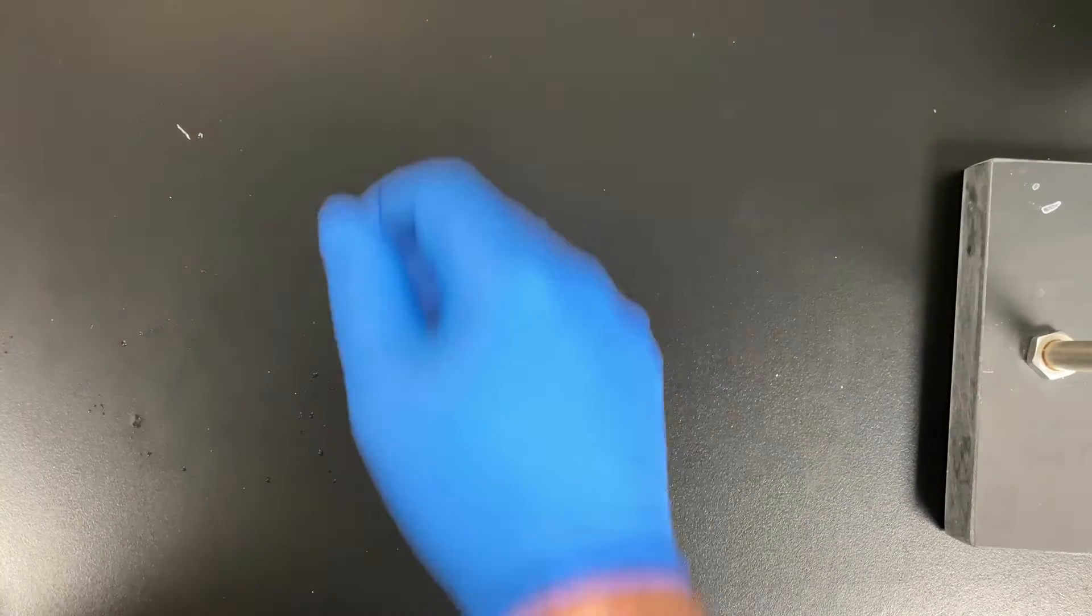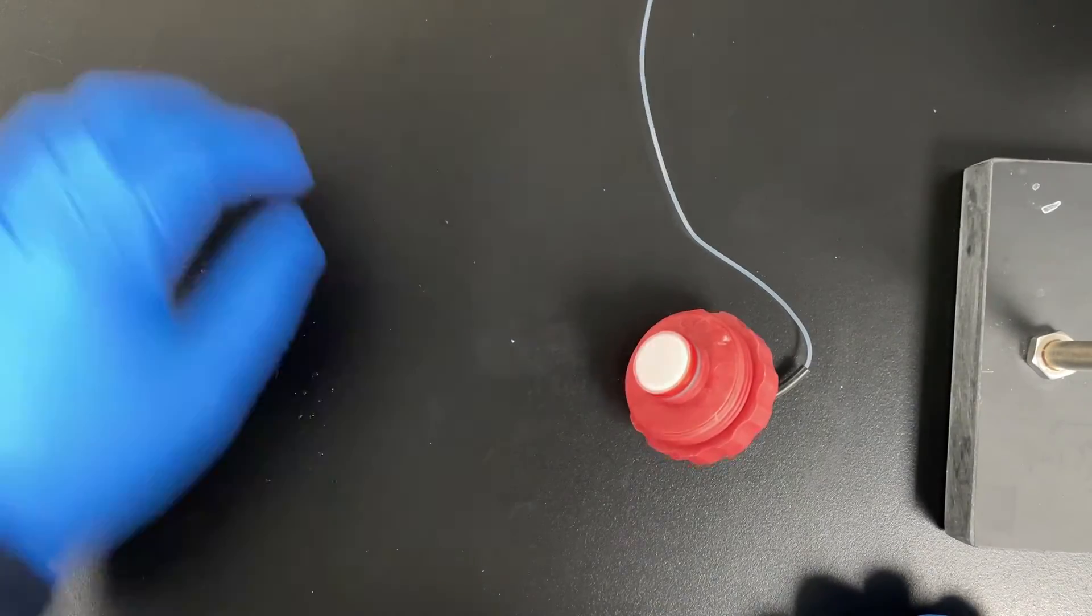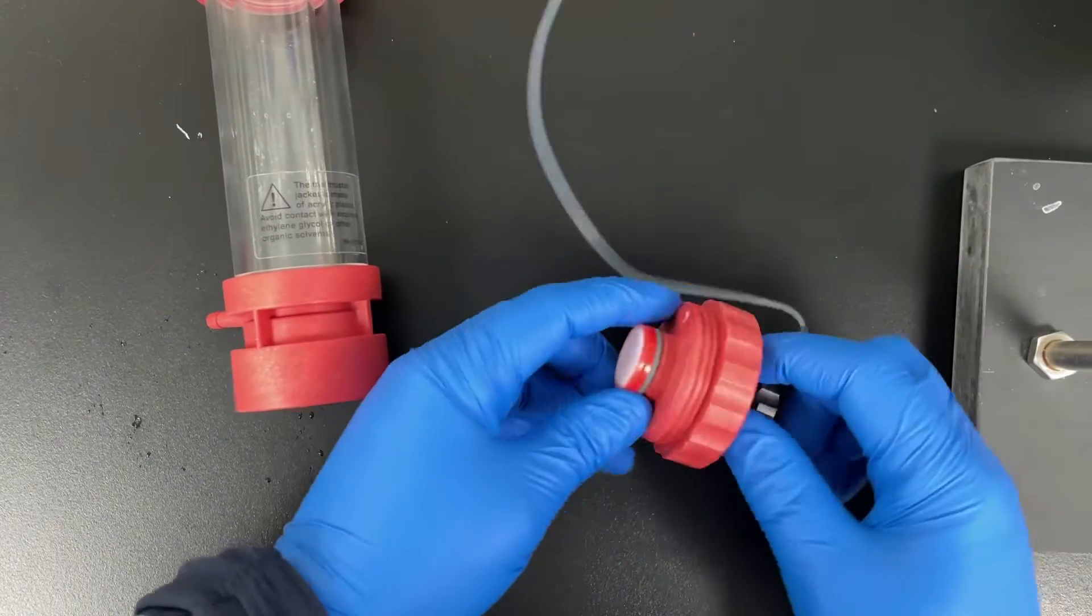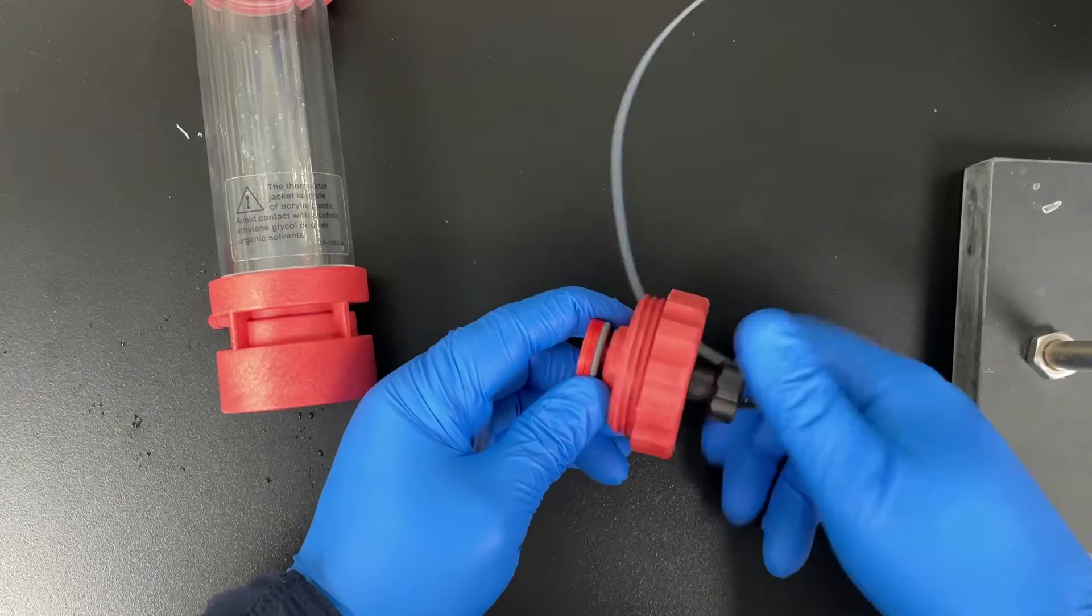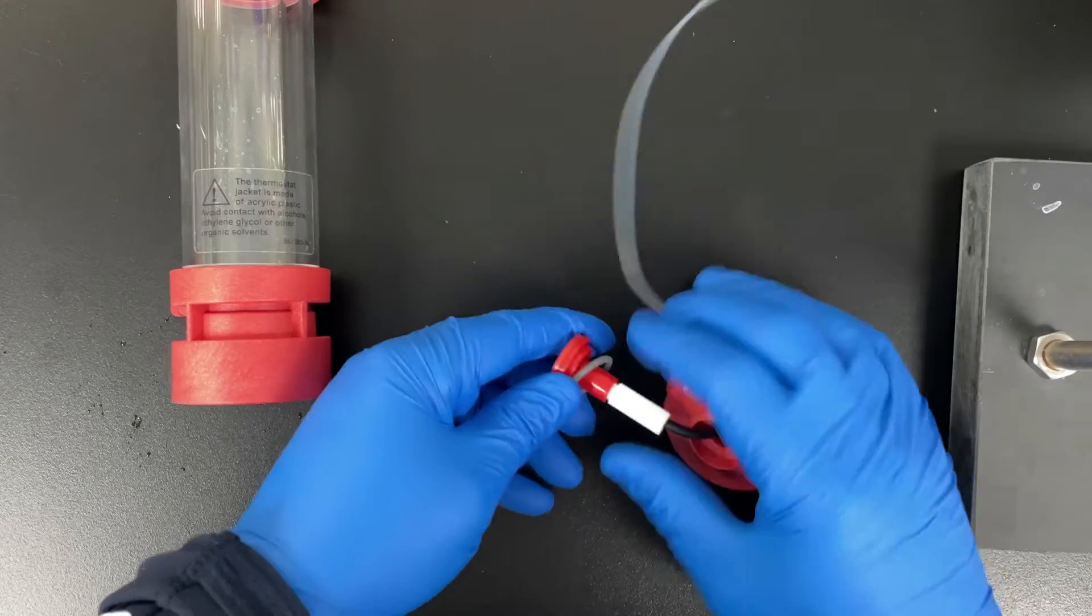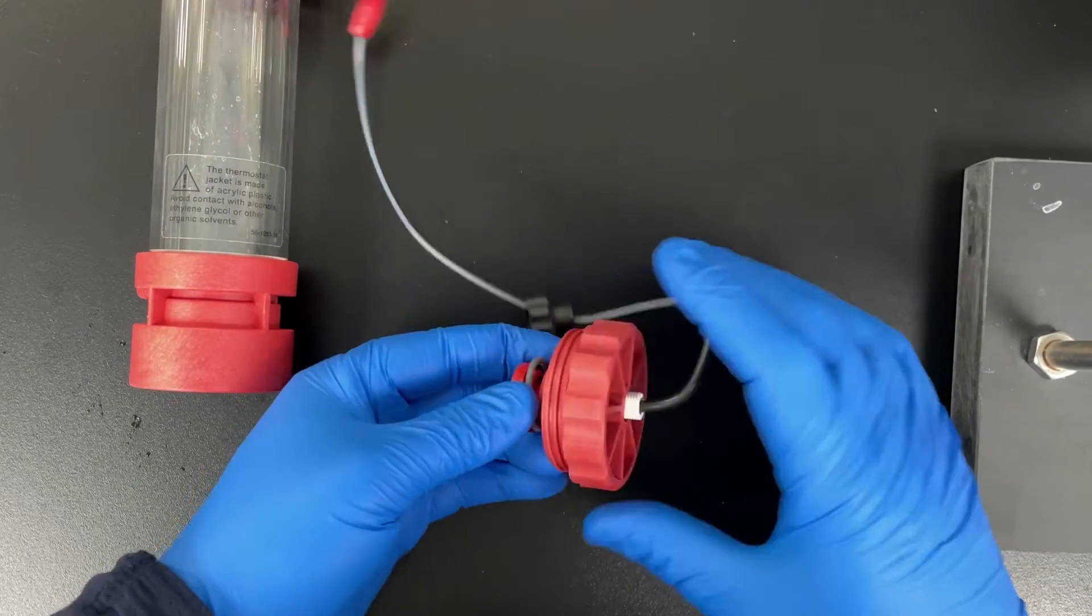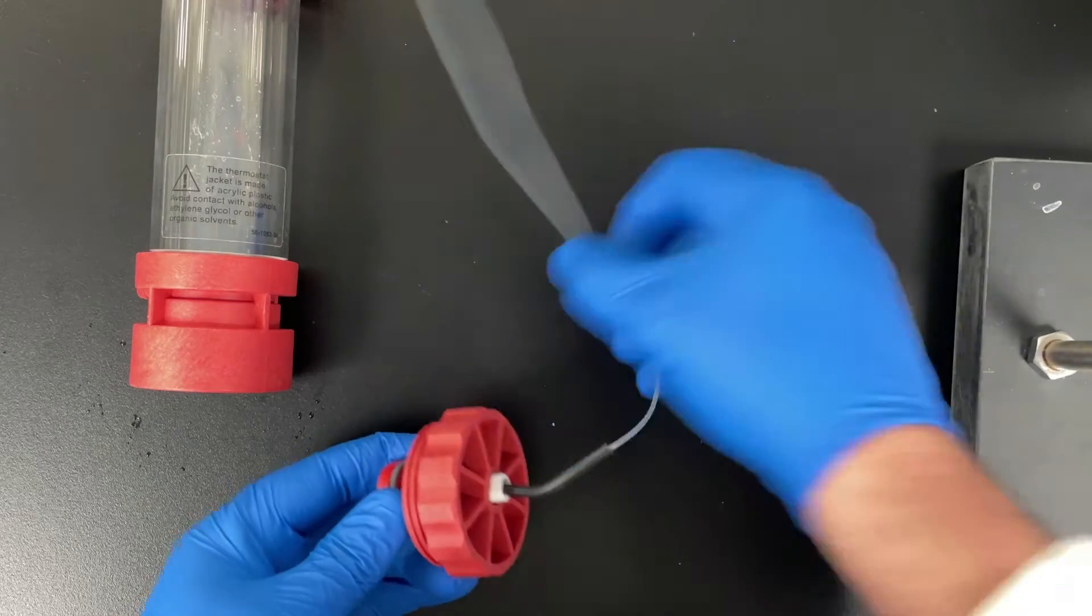The next thing we're going to do is check the bottom adapter for pretty much the same thing. We want to make sure that we're using the right screen, there's no damage to it, and that the distributor and central stem have a nice snug connection. Looks good. And then we'll just put it back together.